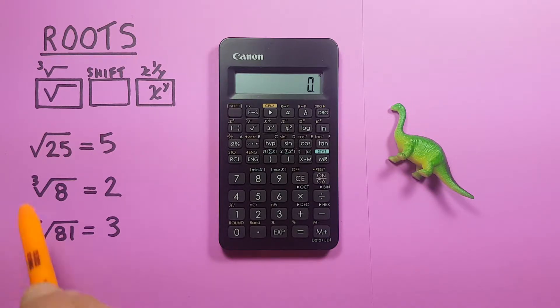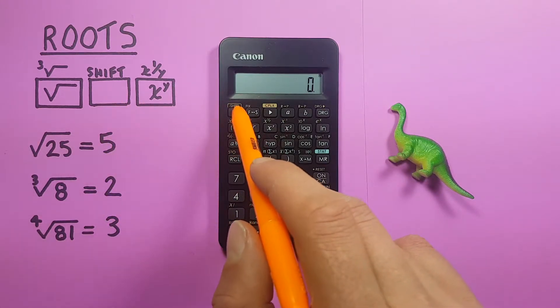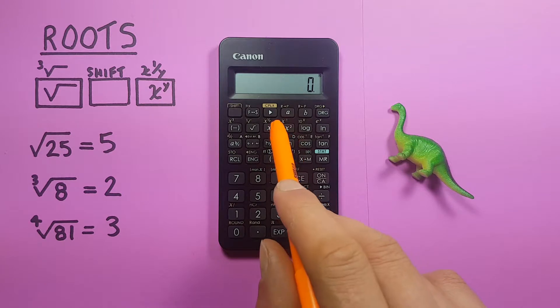The keys we'll be using for this are the square root key located here, the shift key located here, and the x to the y key located here.